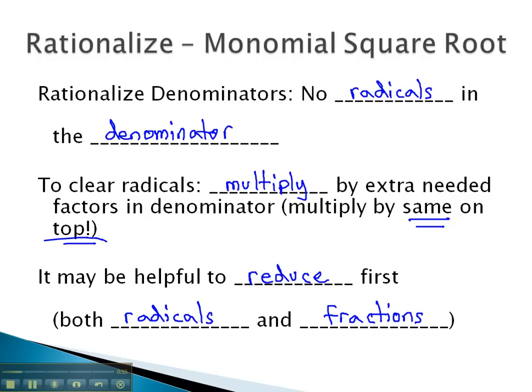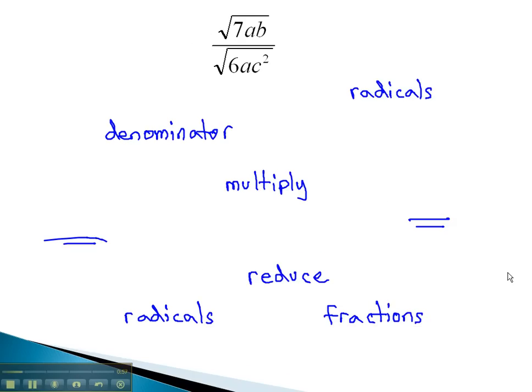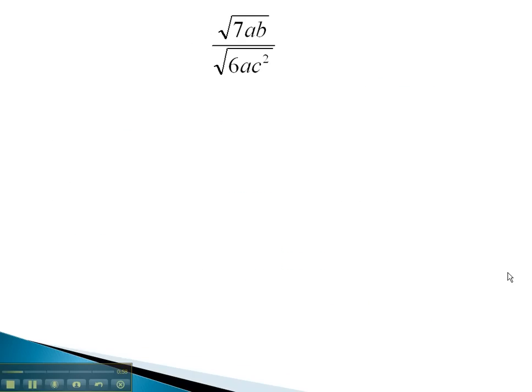Let's take a look at an example where we have to reduce first, and then rationalize the factors that remain. Putting this all under one radical so we can reduce the fraction, we have 7ab over 6ac squared.